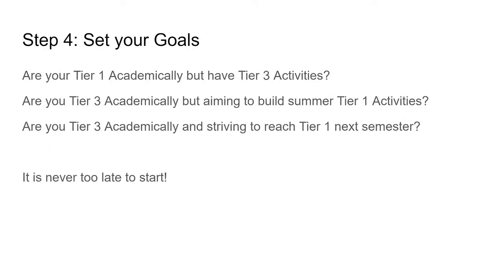Step four: set your goals. Once you identify your tier academically and activity-wise, you can gauge what your expected goal should be. For example, let's say you are a tier one student academically but your activities are pretty vanilla — all you've done was orchestra and you're applying as a bio pre-med major. That's a cliché profile. Do you really think with tier one academics you can carry yourself into Harvard, Stanford, or Princeton? The answer is no — your activities are not going to be good enough for those schools even with tier one academics.